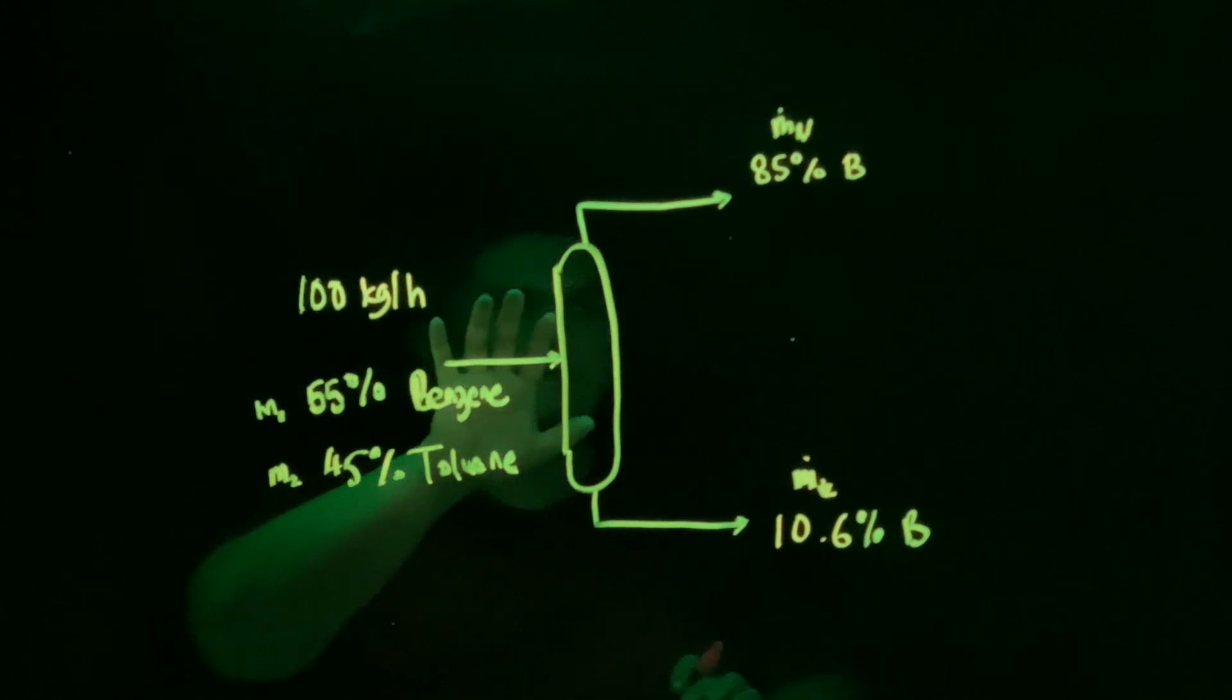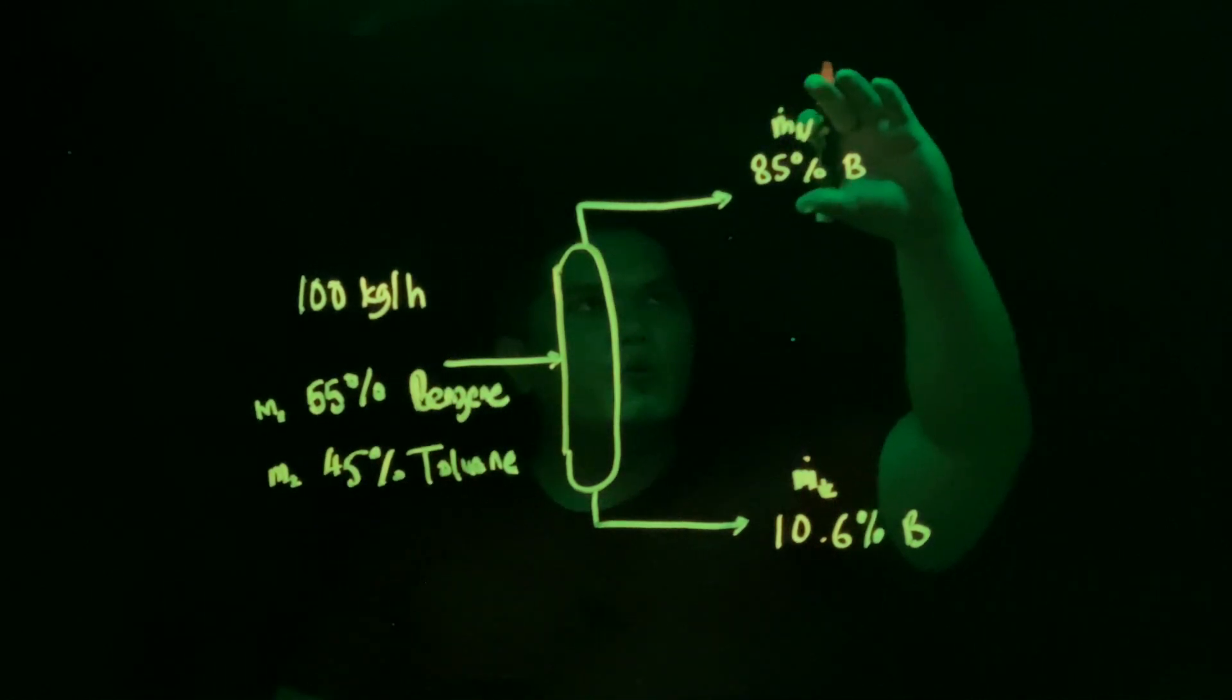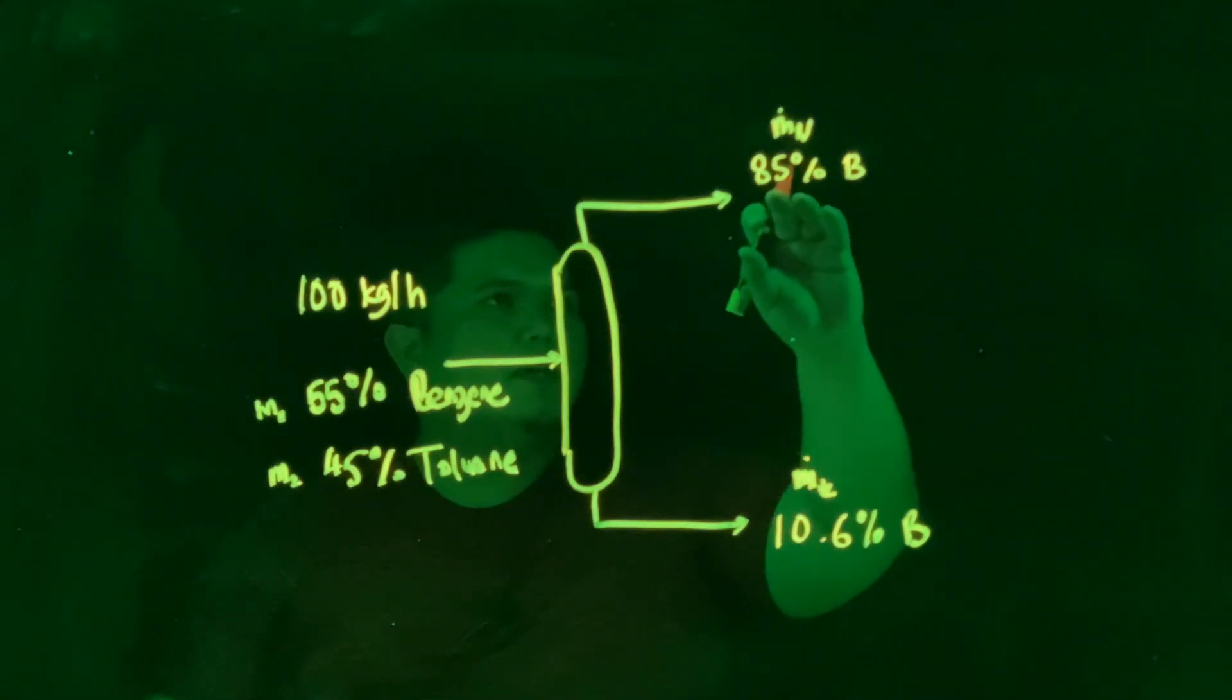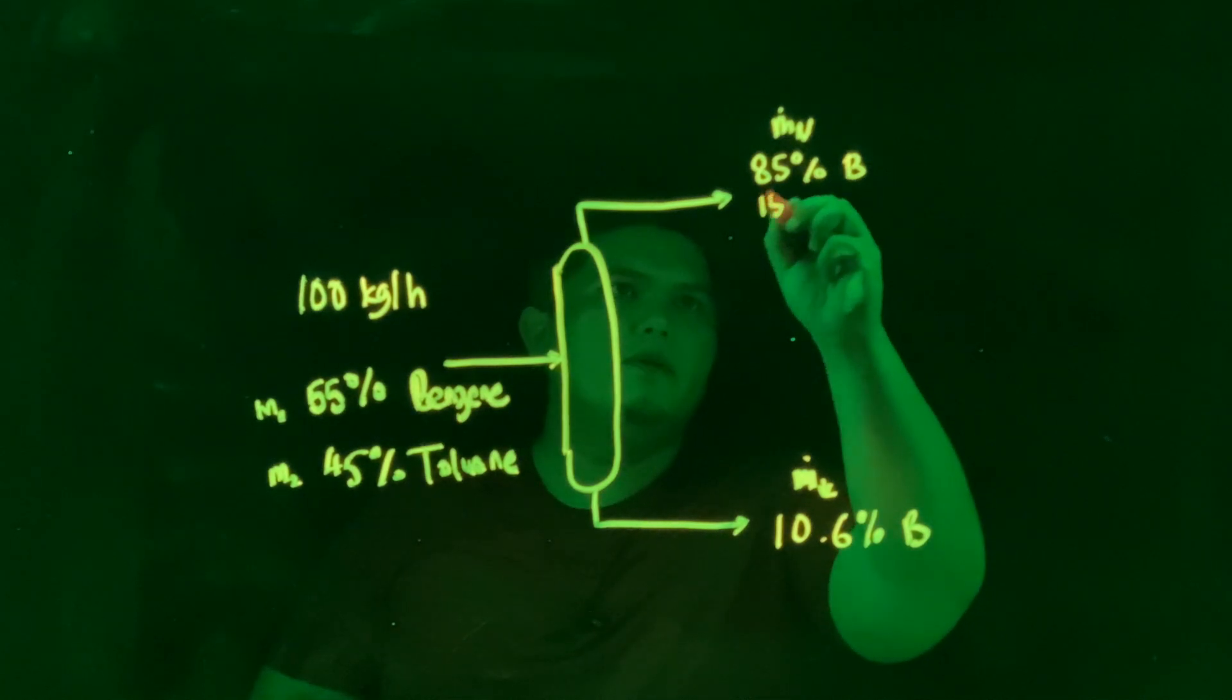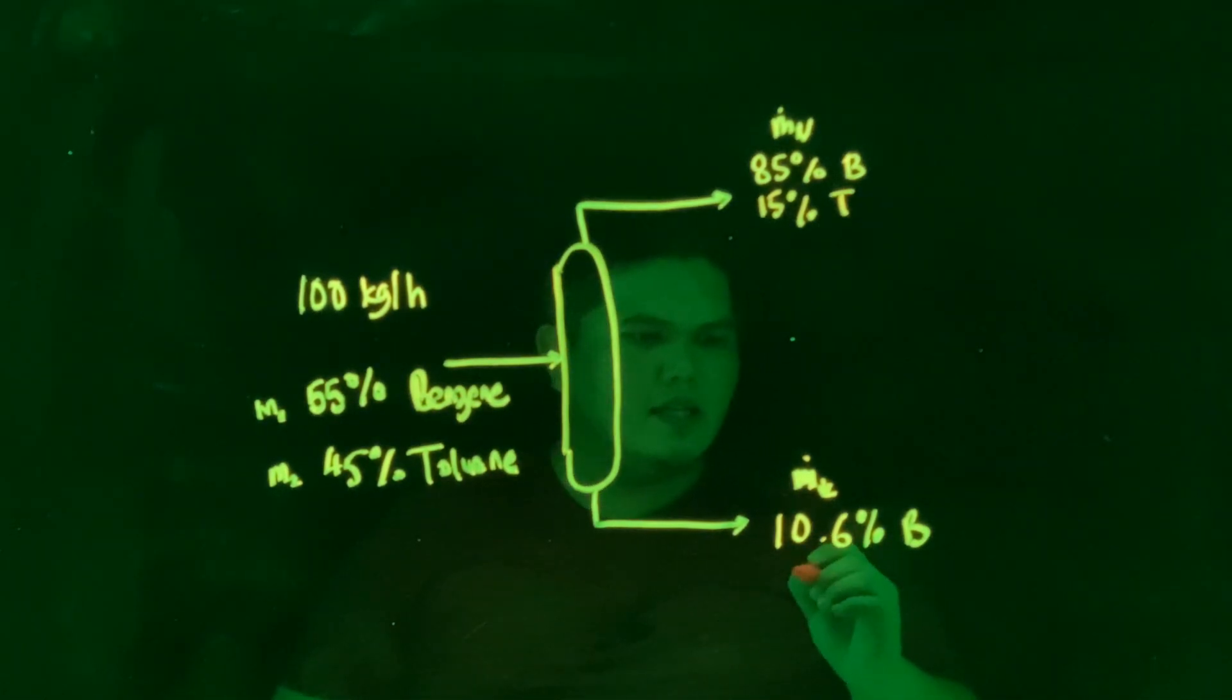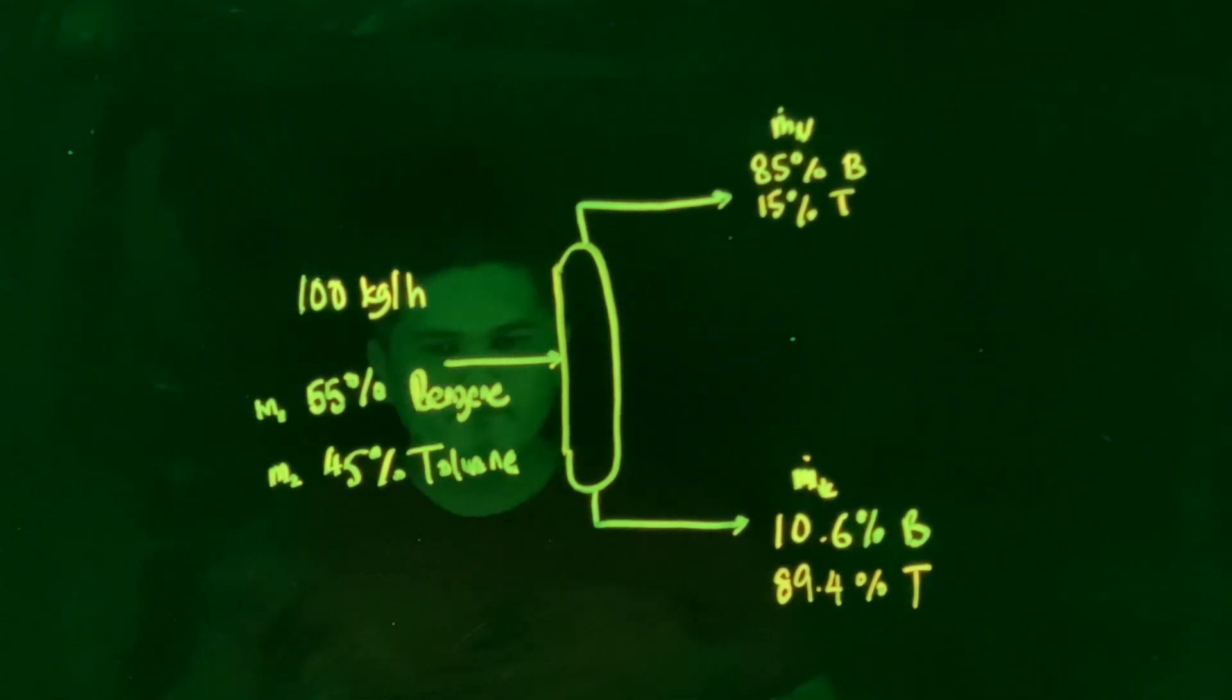So 100 kilogram per hour comes in, and then you have unknown flow rate at the top, you also have unknown flow rate at the bottom. But you were given that 85 percent of benzene at the top, which ultimately will be 15 percent of toluene. And at the bottom here you have 10.6 percent benzene, which you can calculate should be 89.4 percent of toluene at the bottom.